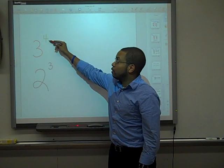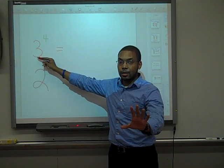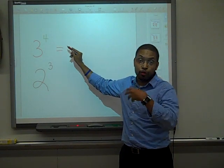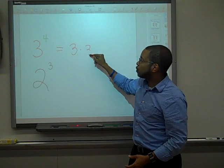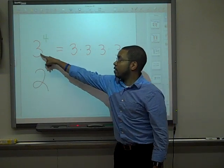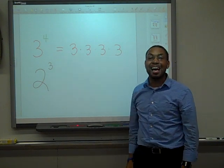Well, the exponent tells you to write the base, which is 3, as a factor, how many times? 4. So 3 to the 4th power as repeated multiplication equals 3 times 3 times 3 times 3. You're writing the base, which is 3, how many times? 1, 2, 3, 4 times as a factor.